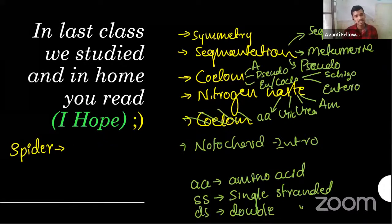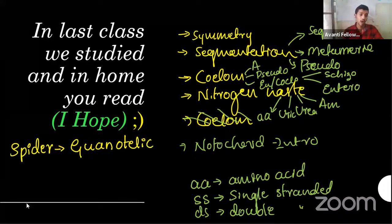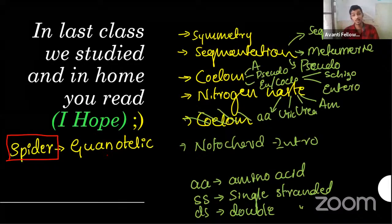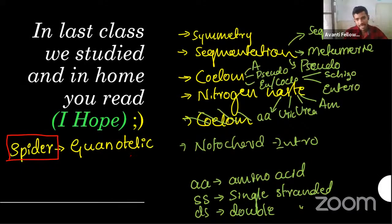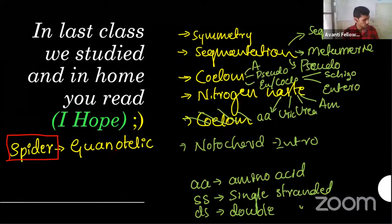Spiders have a different kind of nitrogen waste. The spider is called a gonothelic animal. Can you guys guess what it may excrete? Actually, gonothelic is also a kind of ammonotelic — the name is gonothelic only. I'm expecting answers from YouTube viewers as well.